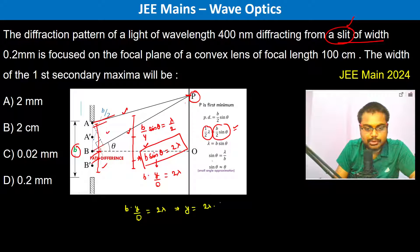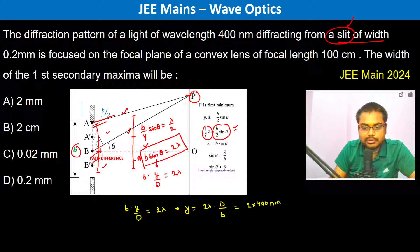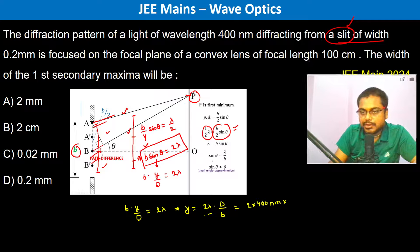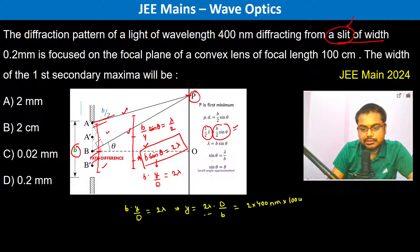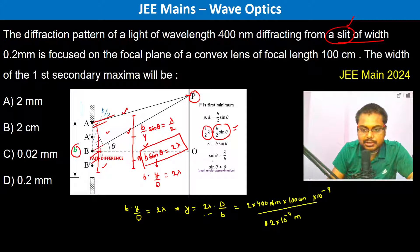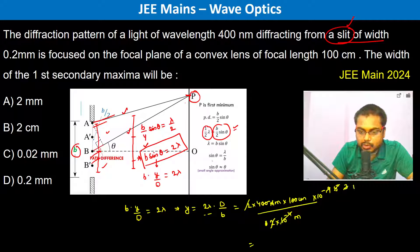Thus B · Y / D = 2λ, so Y = 2λD/B, which equals 2 × 400 nanometers. D is 100 centimeters and B is 0.2 millimeters, which is 2 × 10⁻⁴ meters. Working through the powers of 10: 10⁻⁹ × 10⁻¹ / 10⁻⁴ gives 10⁻⁵, and combined with the numerical factors this gives 4 × 10⁻¹ centimeters.